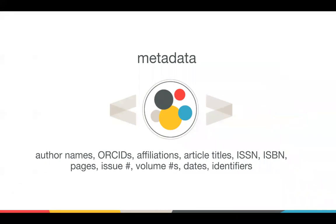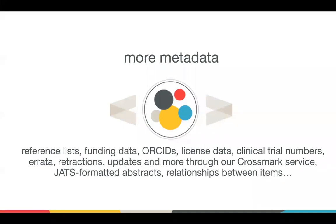Crossref is not just about DOIs. When you register your content, you send us the basic citation metadata for every item, including things like titles, authors, publication dates, issue numbers, ISSN, ISBN, and anything that describes the content you're registering. But we also collect non-bibliographic metadata, which can include the reference list, funding data, ORCID IDs, license data, clinical trial information, abstracts, data about relationships between items, and information on errata, retractions, and updates. We have minimal requirements because we need to support a variety of publishing practices, but we ask that you send us as much metadata as possible and that it be accurate and clean. The more comprehensive your metadata is, the more likely your content will be discovered and disseminated.